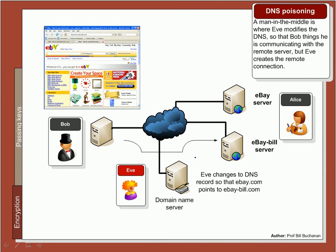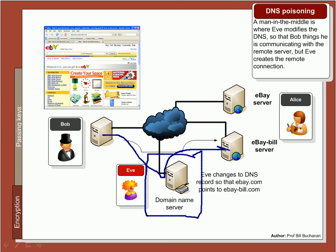Another example is what's called DNS poisoning. Eve poisons the DNS server so that instead of communicating with Alice, which is the eBay server here, the communication actually happens with another server controlled by Eve.